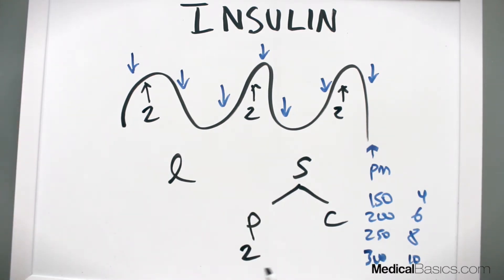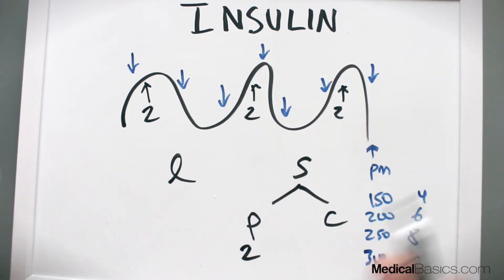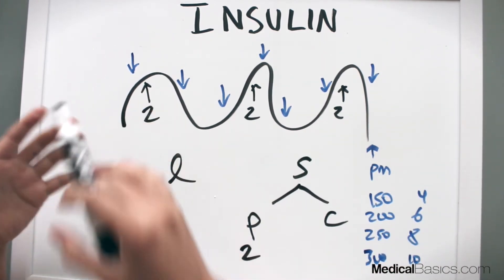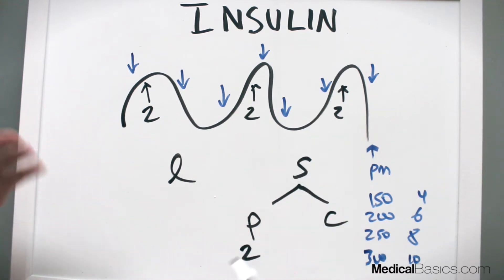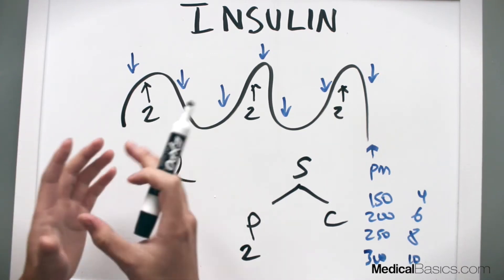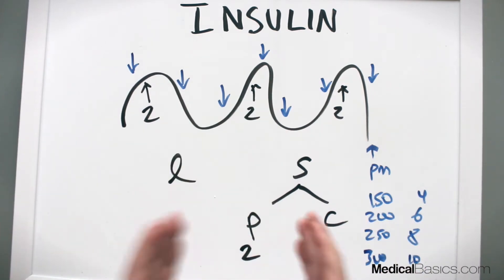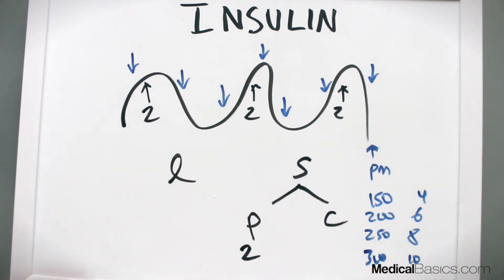Depending on how much sugar checks you order, you may wonder whether prandial and correctional are the same if you're only checking sugars before each meal — and you'd be correct. But if you're checking sugars randomly like Q4 hours, that may not be the case, especially at shift change when they may not always get their sugar checked before every meal. That's where prandial versus correctional really comes into play. Prandial is a set amount of insulin before each meal; correctional is just acting reactively.